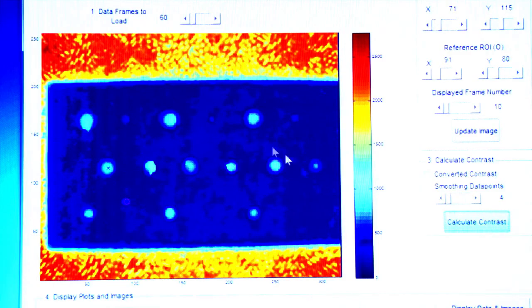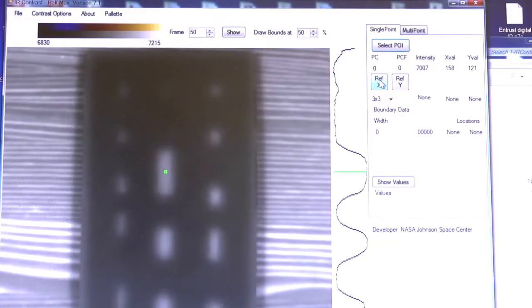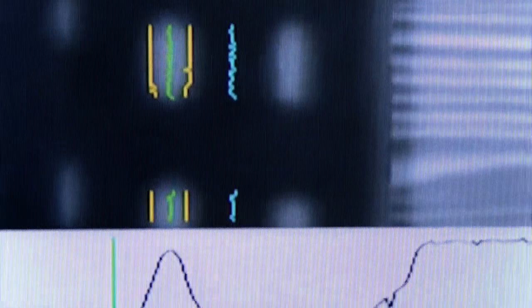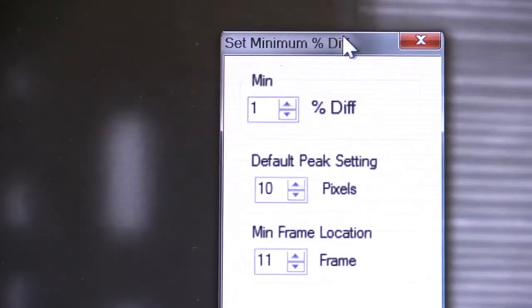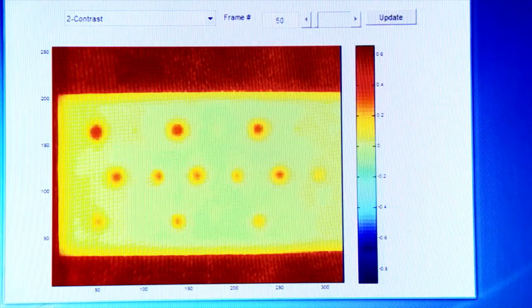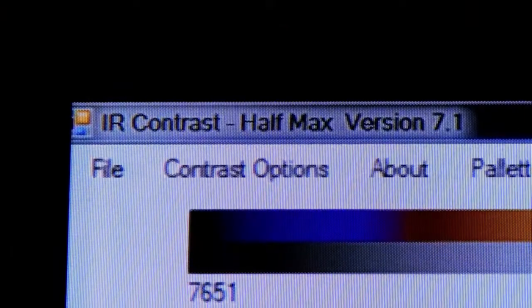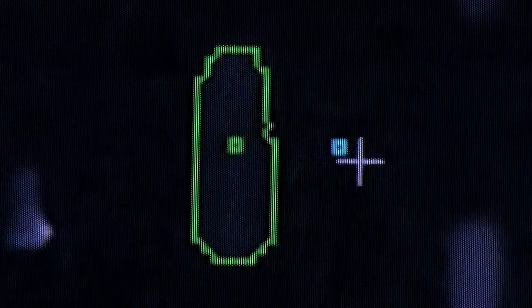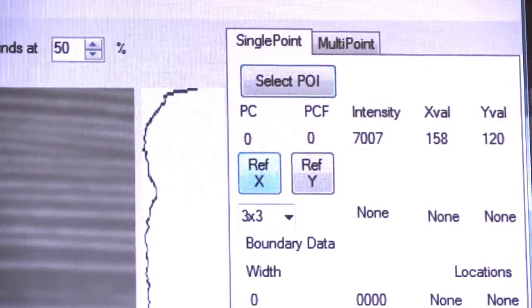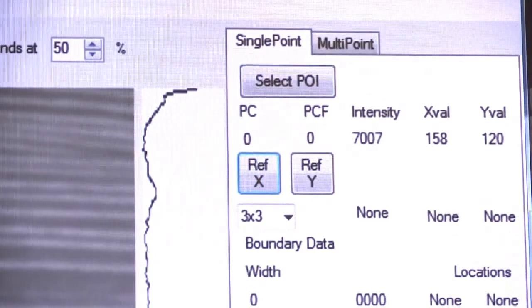The software that NASA has developed is a method called Infrared Contrast. It's a post-processing software that analyzes the data by converting it into contrast data, and you can measure that indication in terms of normalized contrast and parameters based on normalized contrast.